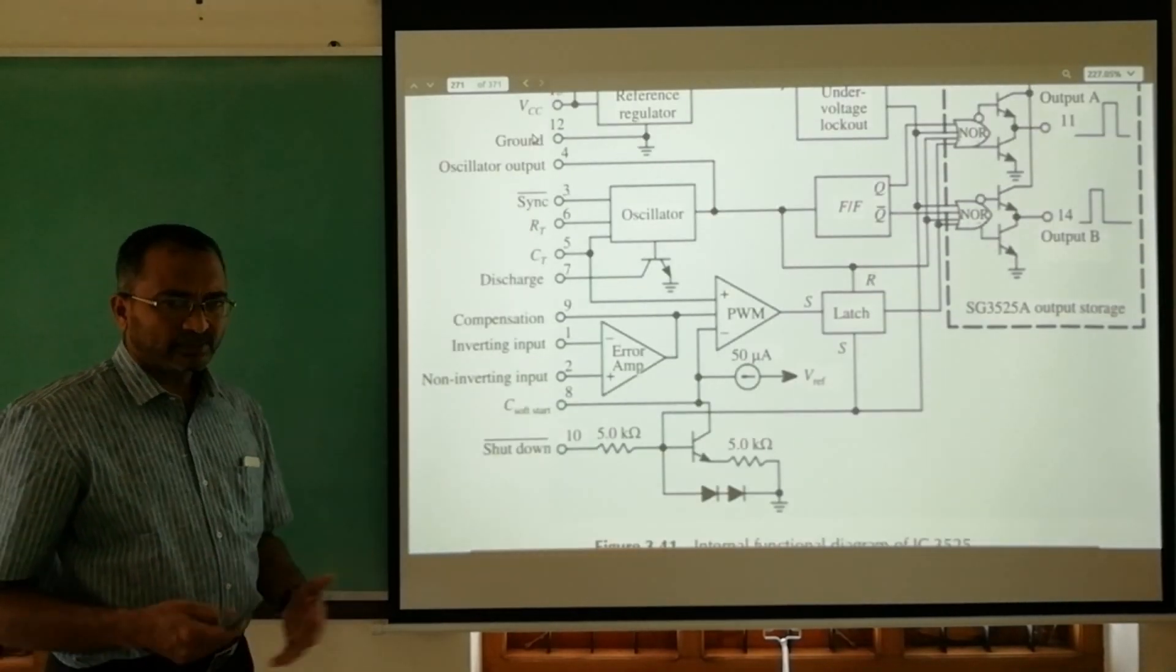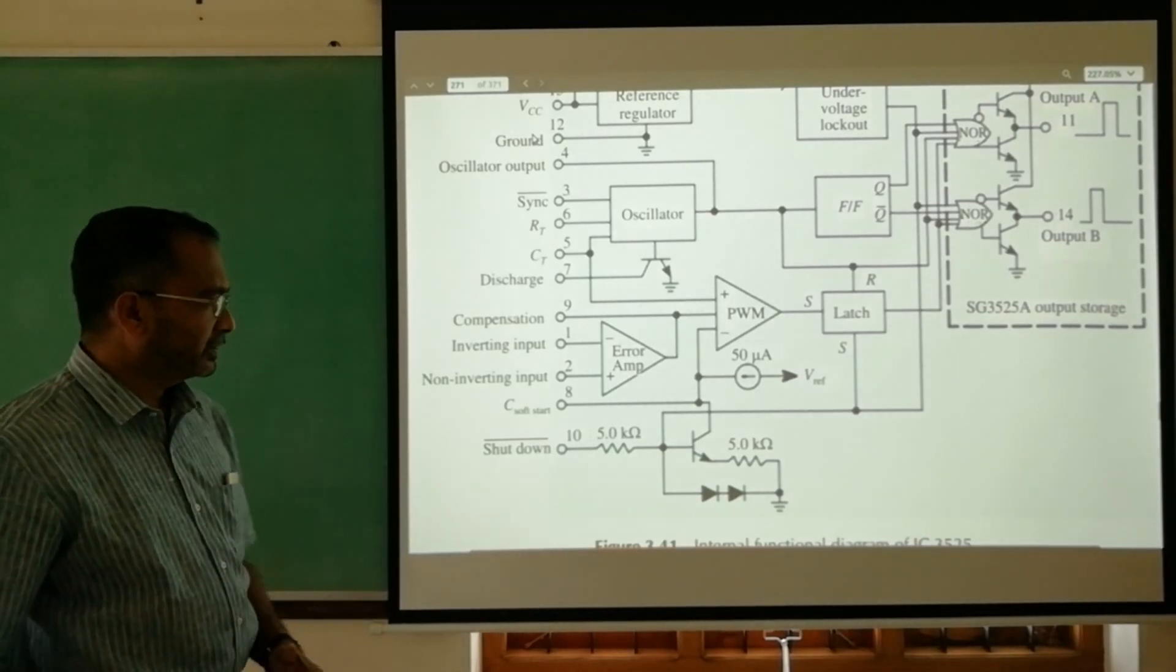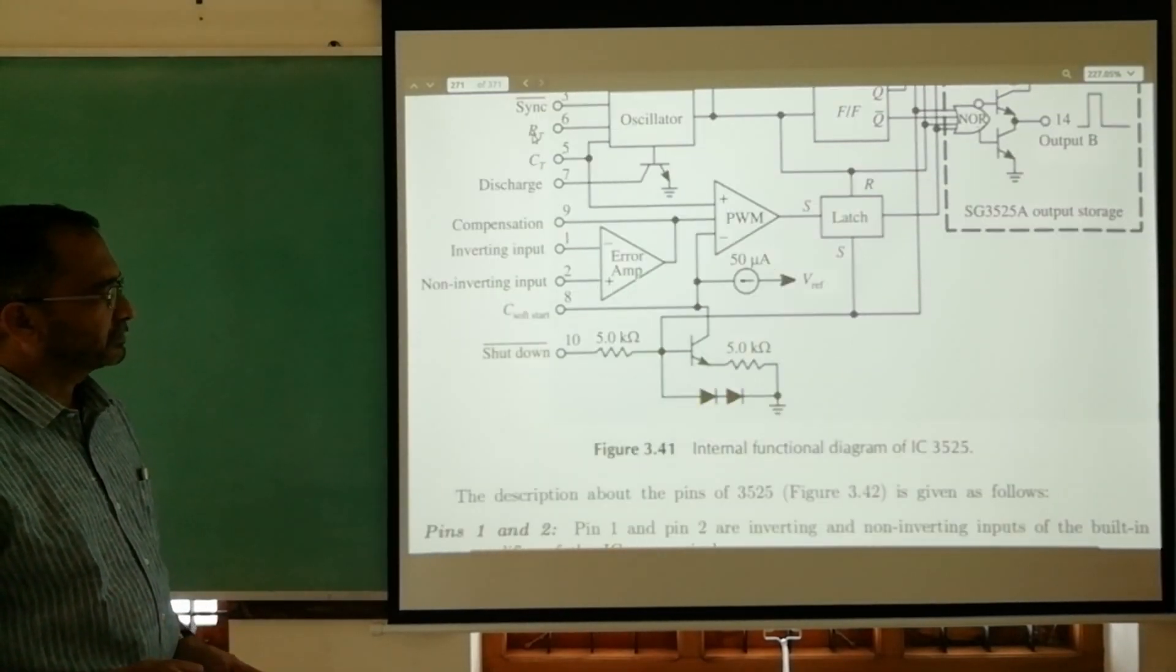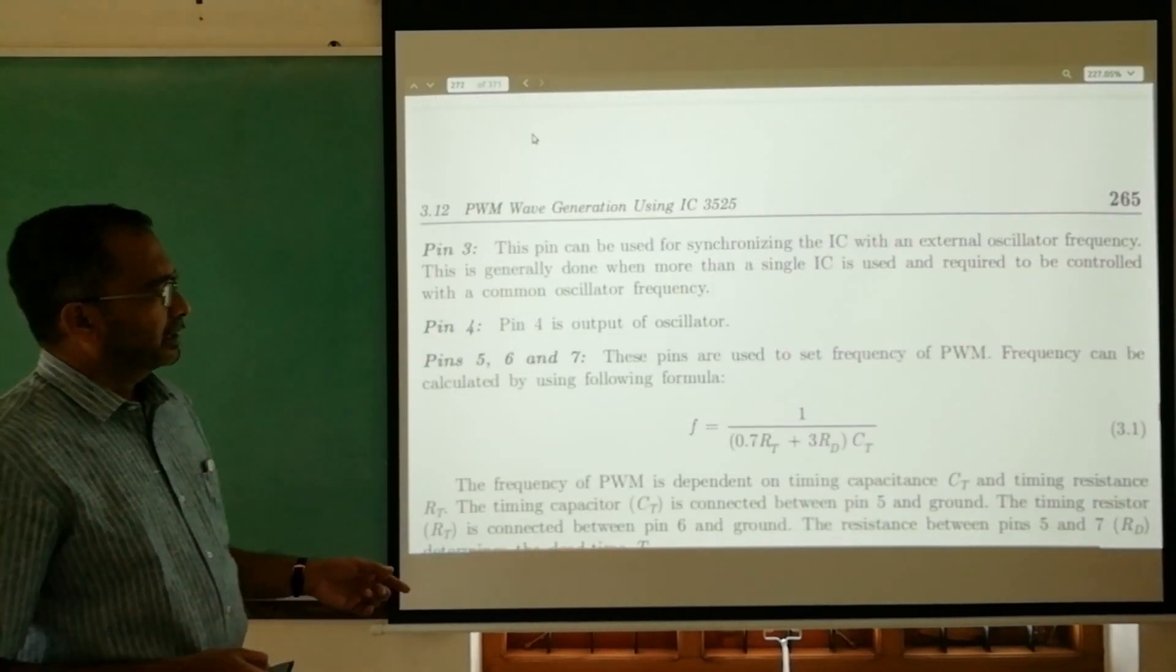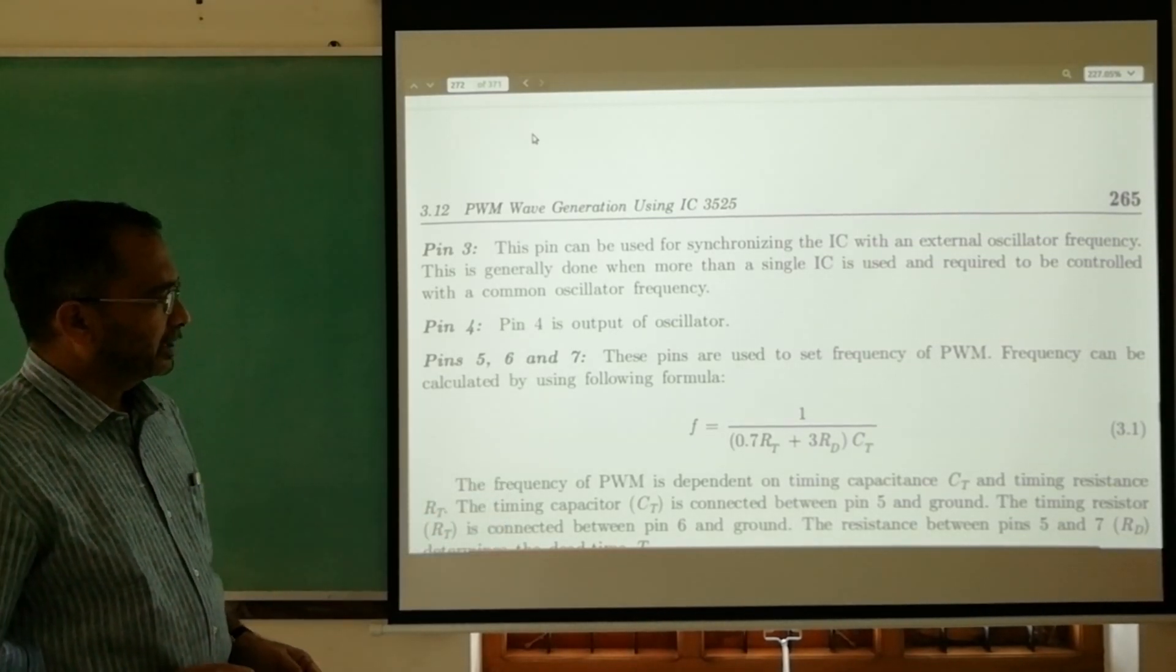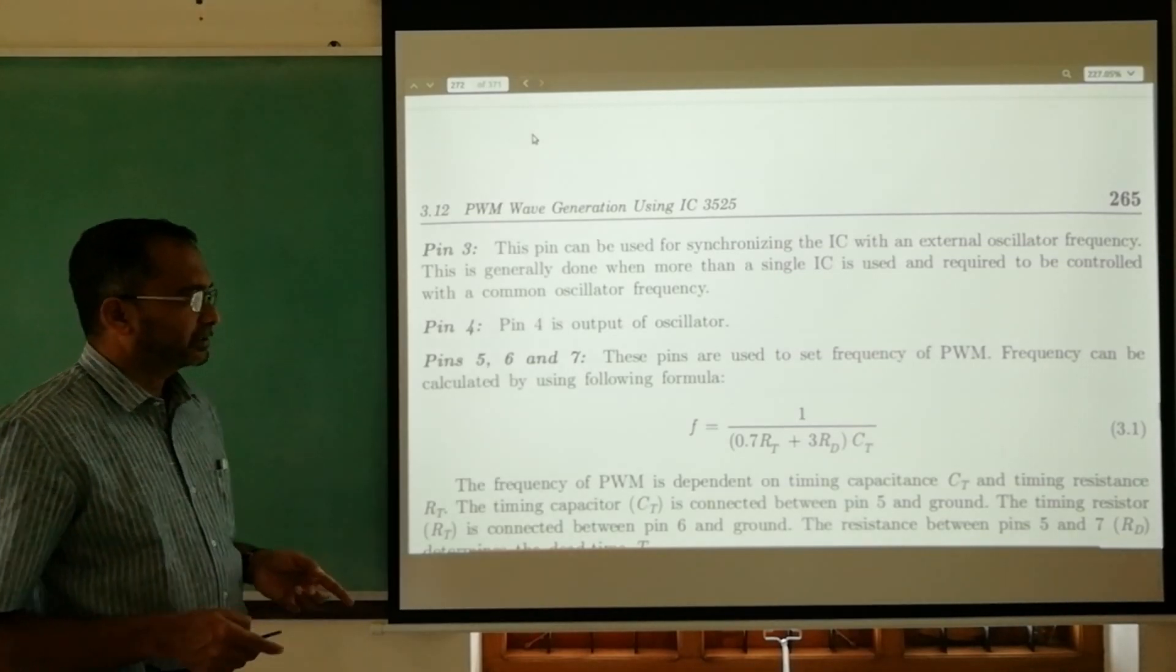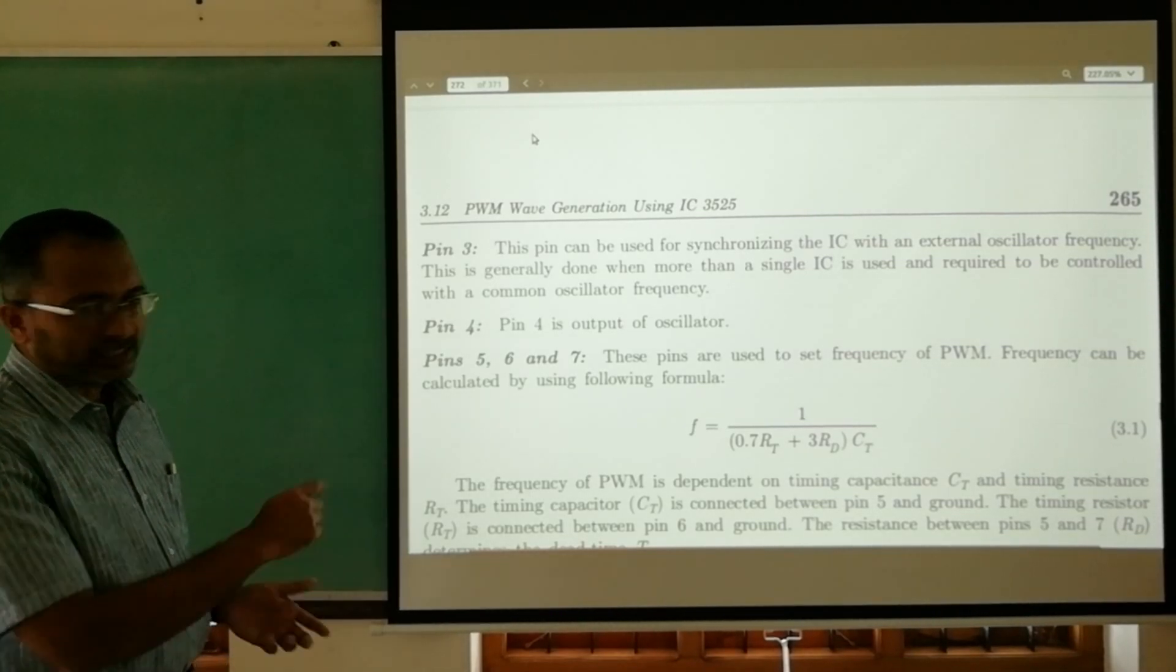When you need to shut down, when it is used in an inverter circuit, this vertical pin is used. This is only a glance on the internal function diagram of 3525. The equation for the output frequency is given by 1 / (0.7*RT + 3*RD)*CT, where RD, CT, and RT are two resistances and a capacitor that should be connected externally with that IC.